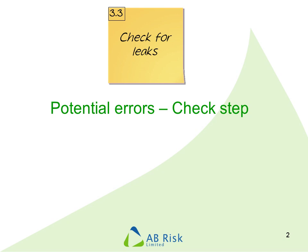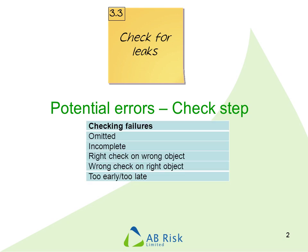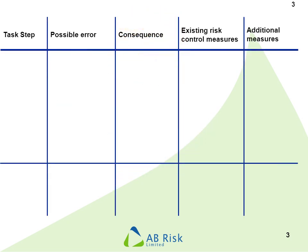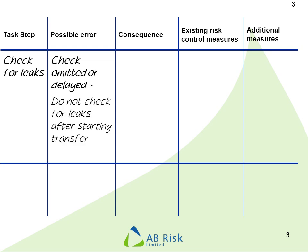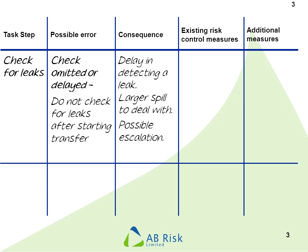We'll then go to our potential errors from our checklist, and there's a number that I think we can identify. We'll complete the table like we did before — check for leaks. Let's think about omitting or delaying those checks; in other words, not making a check immediately after starting the transfer. If we delay that step and there is a leak, we're not going to realise it for some time. The spill will be bigger, more material will end up being spilt, and there's a higher chance of escalation.